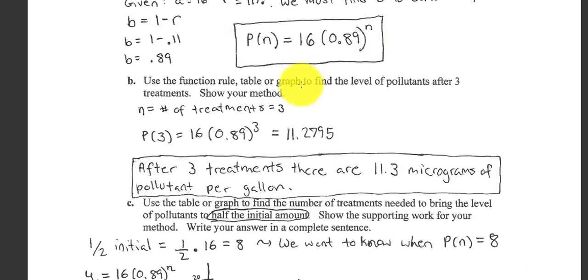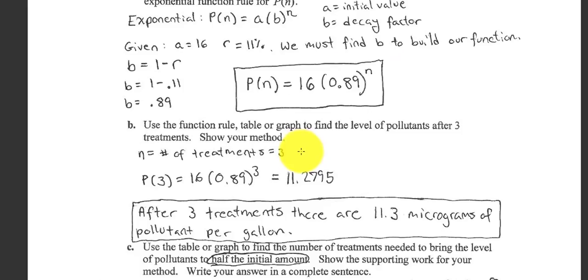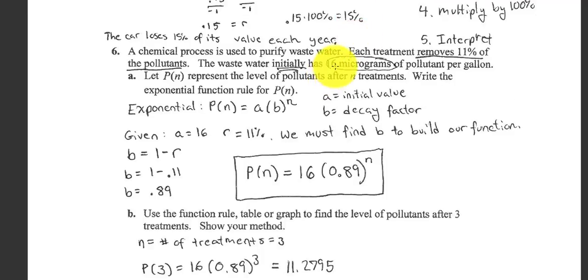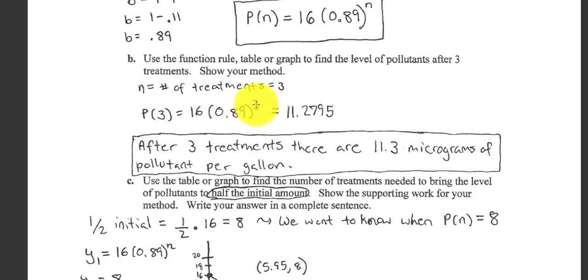So now that we have our function rule, how much pollutant will remain after three treatments? Well, sub in three for N, and we end up with 11.2. That makes sense. We start with 16 micrograms of waste. After three treatments, we're down to 11 micrograms of waste.